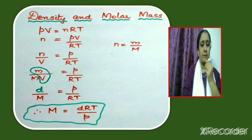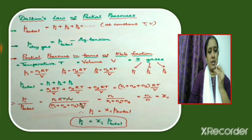Where M is the molar mass, d is the density, R is the universal gas constant, T is the temperature, and P is pressure.